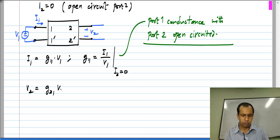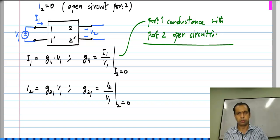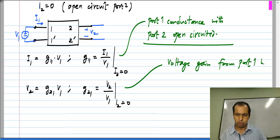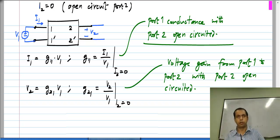Now, V2 will be G21 V1. So, G21 will be nothing but V2 by V1 with port 2 open circuited. This G21 is nothing but the voltage gain from port 1 to port 2 with port 2 open circuited. Very similar to whatever we had earlier, and naturally G11 has dimensions of conductance and G21 is dimensionless.